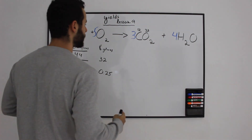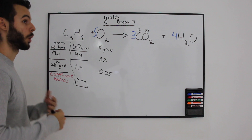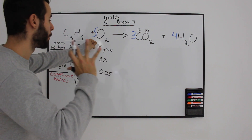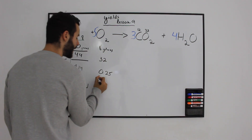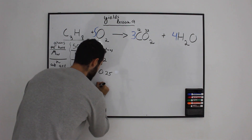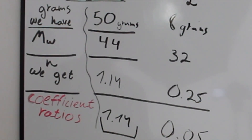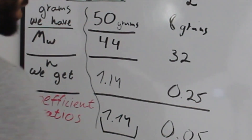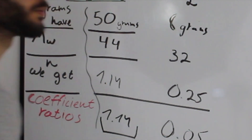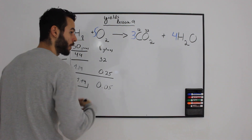You might say oxygen is our limiting reactant because we only have 0.25 moles — but wait, you have to compare the coefficient ratios. One mole of propane reacts with five moles of oxygen, which means we have to divide 0.25 by 5. We get a coefficient ratio of 0.05, and only after comparing these ratios can we identify the limiting reactant.